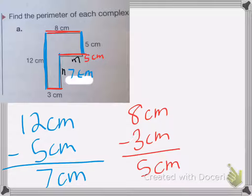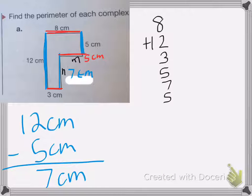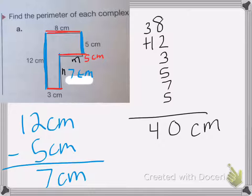Now I can add these all up to get my total. So I have 8 plus 12 plus 3 plus 5 plus 7 plus 5. Add these up. 8 plus 2 is 10 plus 3 is 13 plus 5 is 18 plus 7 is 25 plus 5 is 30. And my 3, 3 plus 1 is 4. So my total perimeter is 40 centimeters.